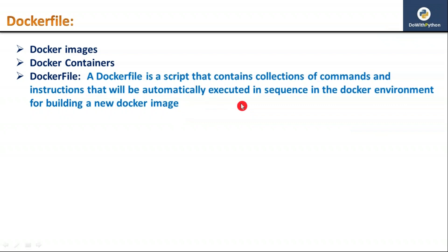A Dockerfile is basically a text file — it consists of some coding techniques, that's why it is called a script. A Dockerfile is a script that contains a collection of commands and instructions that will be automatically executed in sequence in Docker for building a new Docker image. It is like a shell script, Python script, or bash script, but the commands are Docker-related. By executing that script you can create your own Docker image.